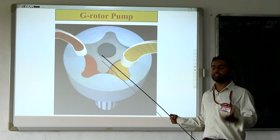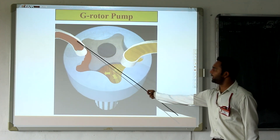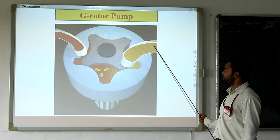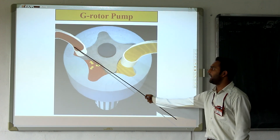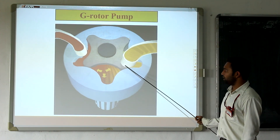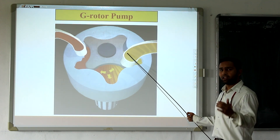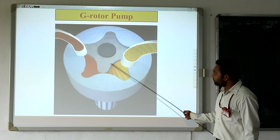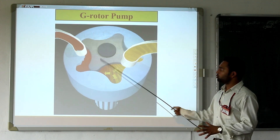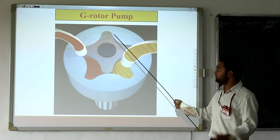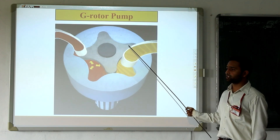Gerotor pump is also a type of gear pump. Basically, suction is possible from one side and this is the discharge side. Red indicates suction and yellow indicates discharge. Suction is possible because area increases, pressure decreases, and fluid moves towards the inner side of this gear. Similarly, at the outer side, whenever area decreases, pressure increases and discharge is generated. In case of this inner gear, there are four teeth, and the outer gear has five grooves. So we can consider the outer teeth having N numbers and the inner teeth having N-1 numbers of grooves and teeth. This is the basic construction of the gerotor pump.